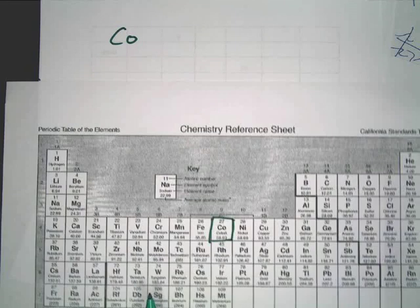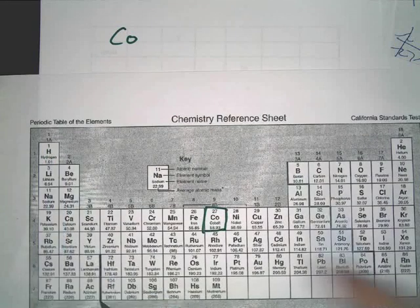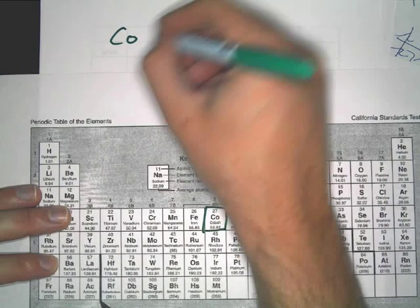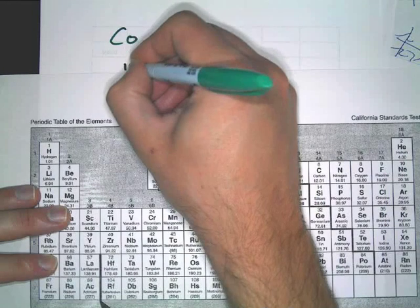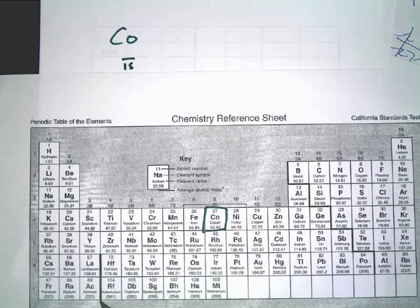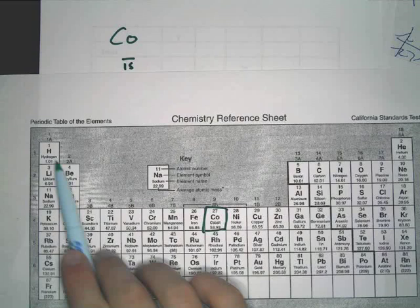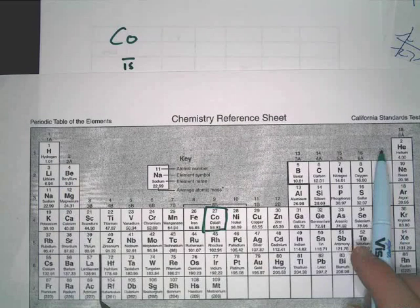Remember, we have 1S. That's our first one. We're going to write out 1S. It has one orbital. Next. Is everybody with me? Where have we got 1S?